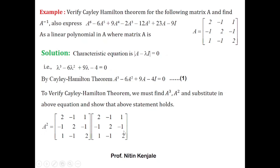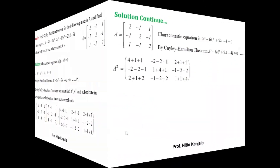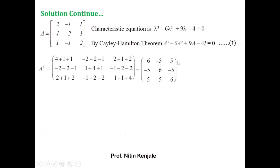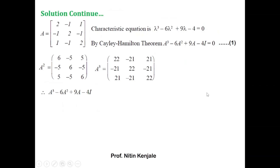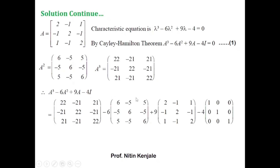You can use a calculator to find higher powers of A or go the manual way. A² = A × A, so by multiplying A with A you get A². Similarly, A³ = A² × A — multiplying these two matrices gives A³. Finally, substituting A³, A², A, and I into equation (1), using simple matrix algebra, this expression equals the zero matrix.